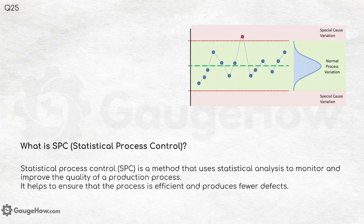What is SPC — Statistical Process Control? SPC is a method that uses statistical analysis to monitor and improve the quality of a production process. It helps ensure that the process is efficient and produces fewer defects, and is the advised process when minimal defects are required.